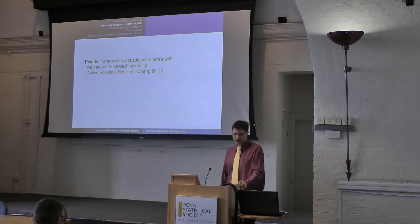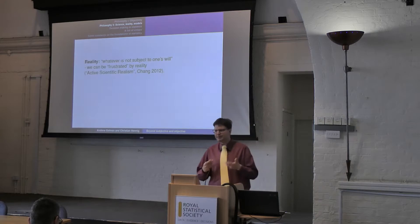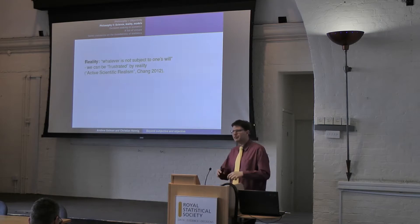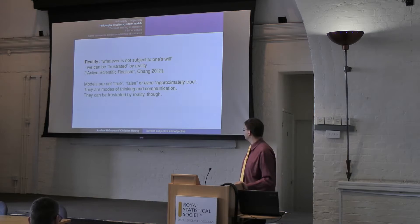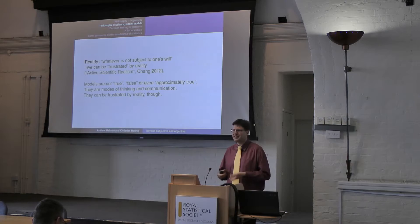People basically discuss in science — they try to systematically bring their observations together and make up a social worldview. There's a special role for mathematical models: mathematics is a mode of communication with the special feature that its symbols are uniquely defined, so it's a tool to enable agreement. We follow Hasok Chang, who suggested something he called active scientific realism: whatever is not subject to one's will is reality. This means we can be frustrated by reality, and in science we want to avoid that. An implication is that the models we use are not true or false or even approximately true — they are modes of thinking and communication. However, we want to set them up so they are not frustrated by reality too much.